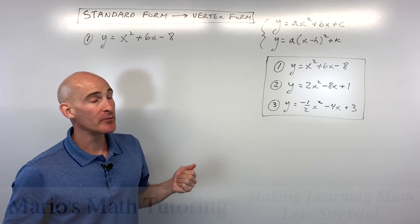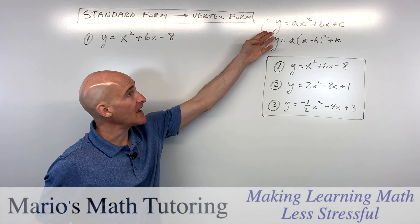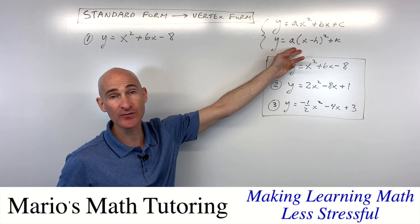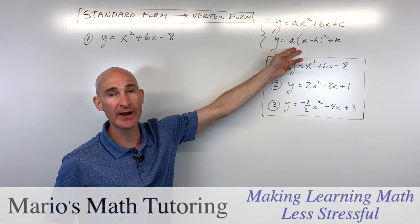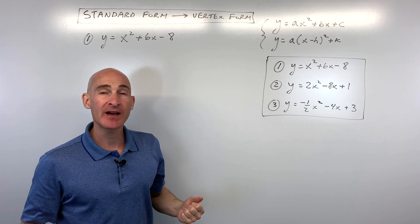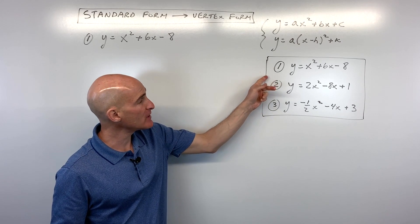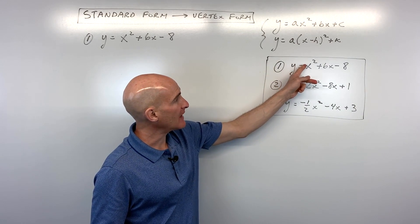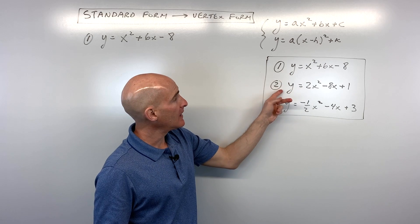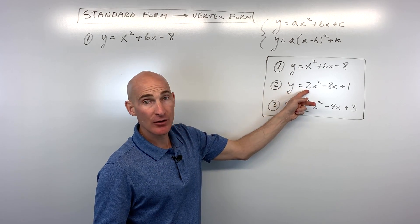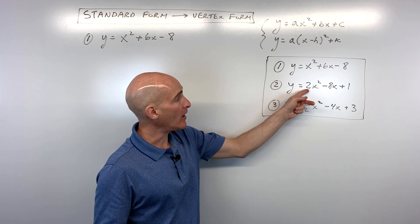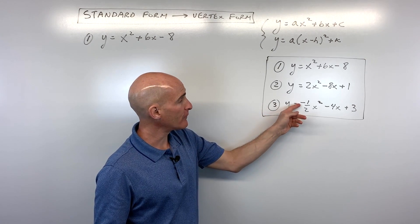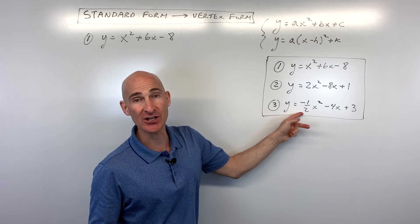In this lesson, you're going to learn how to go from the standard form of the quadratic equation to the vertex form of a quadratic equation, and we're going to get there by completing the square. We're going to do three examples: starting with an easy example where the leading coefficient is 1, a more challenging example where it's an integer but not 1, and then a difficult one where the leading coefficient is negative and a fraction.